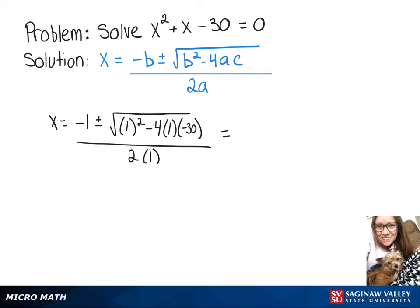When we simplify that we'll get negative 1 plus or minus the square root of 121 over 2. And then that is equal to negative 1 plus or minus 11 over 2.